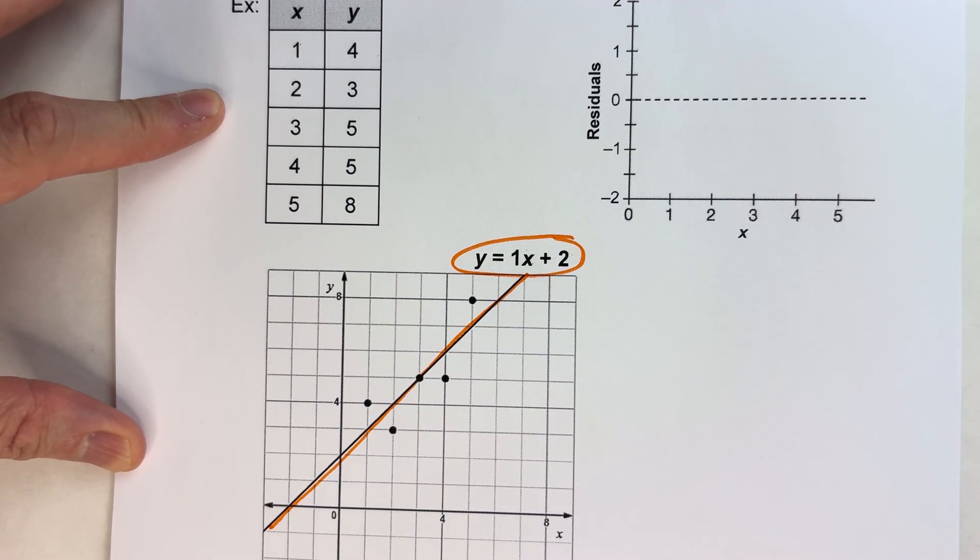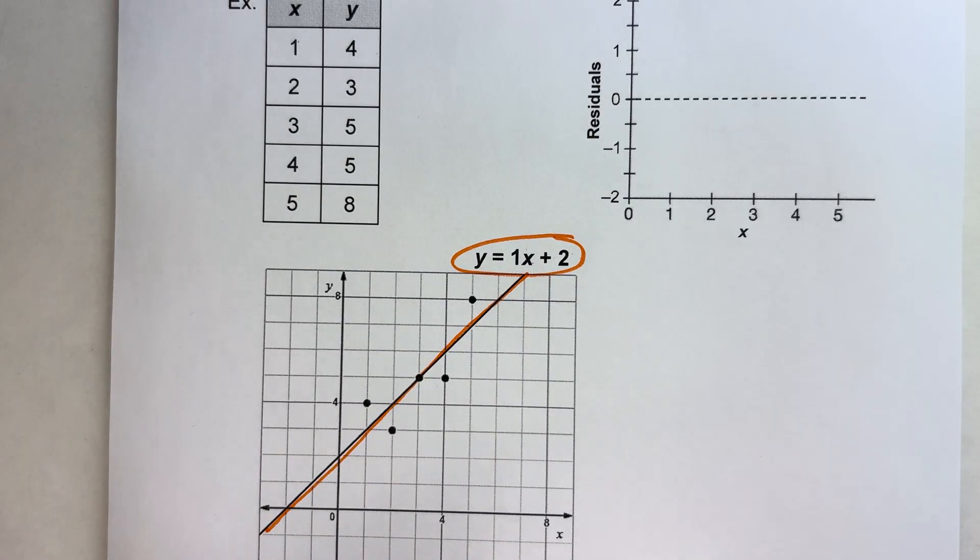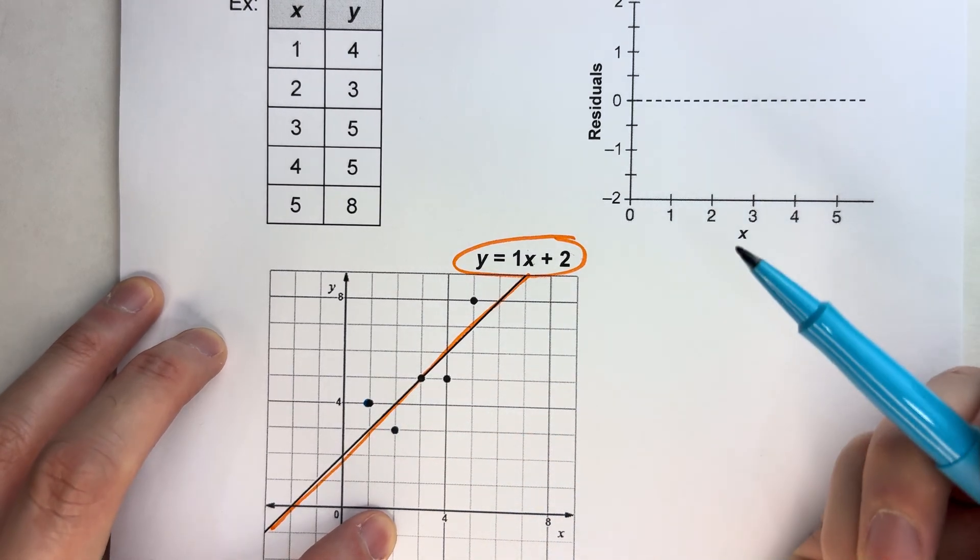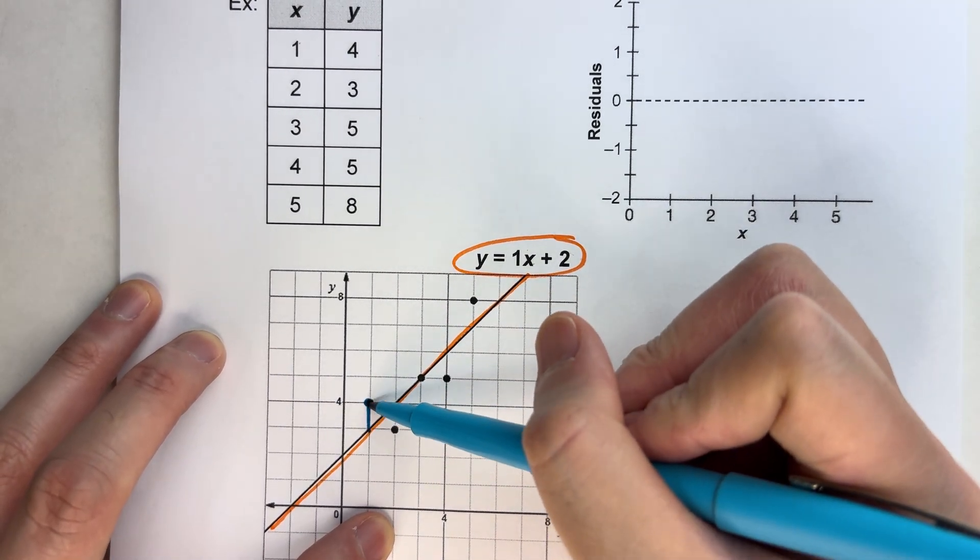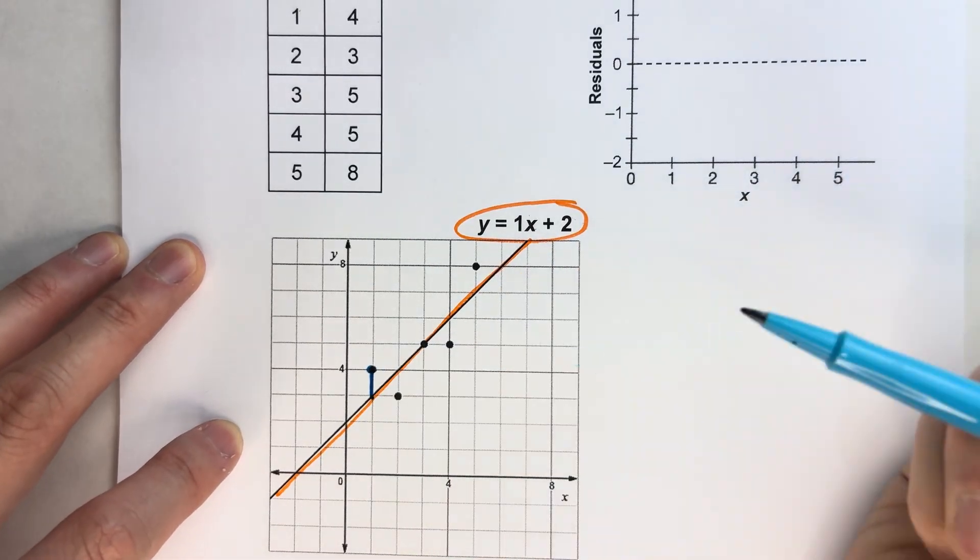So what a residual will measure is how far away from each data value it is from the line. For example, see this data value here? See how it's 1 above the line? We say it has a residual of 1.